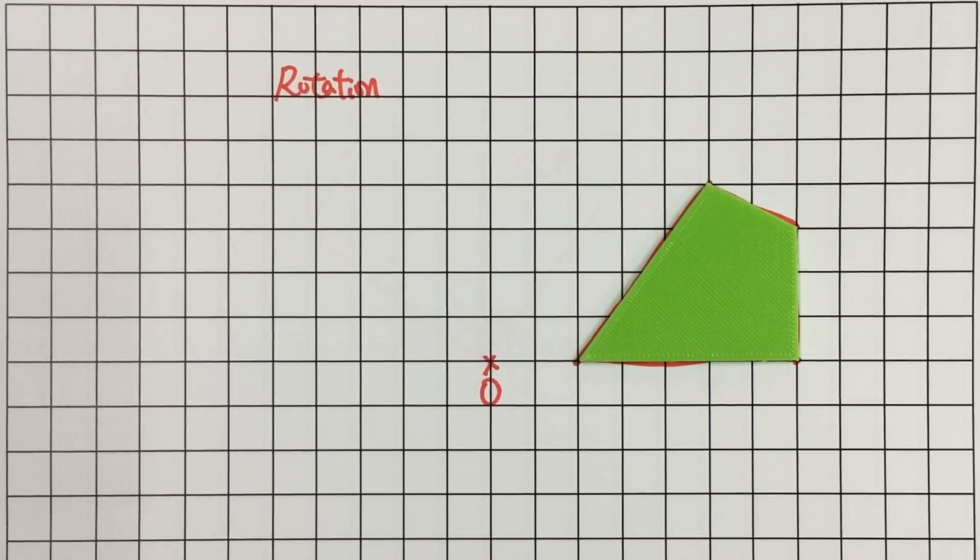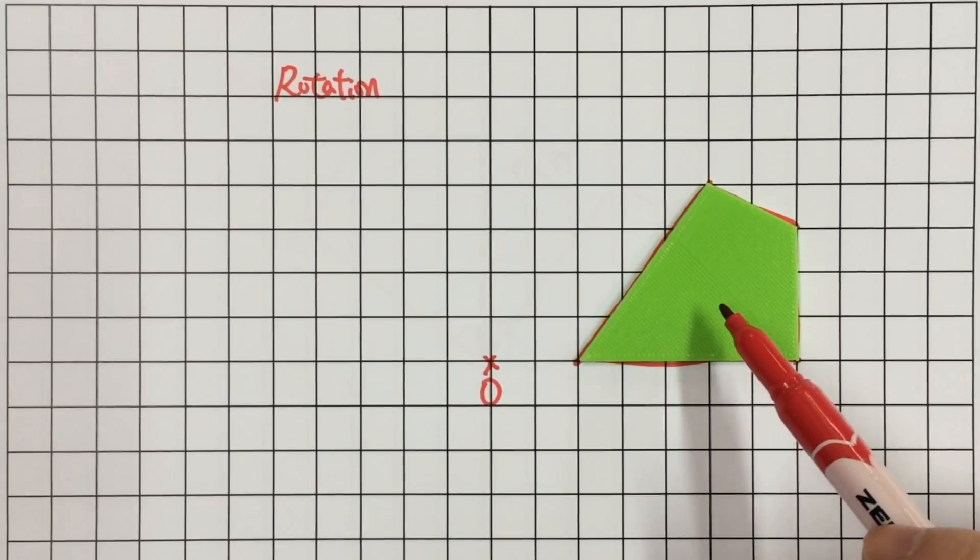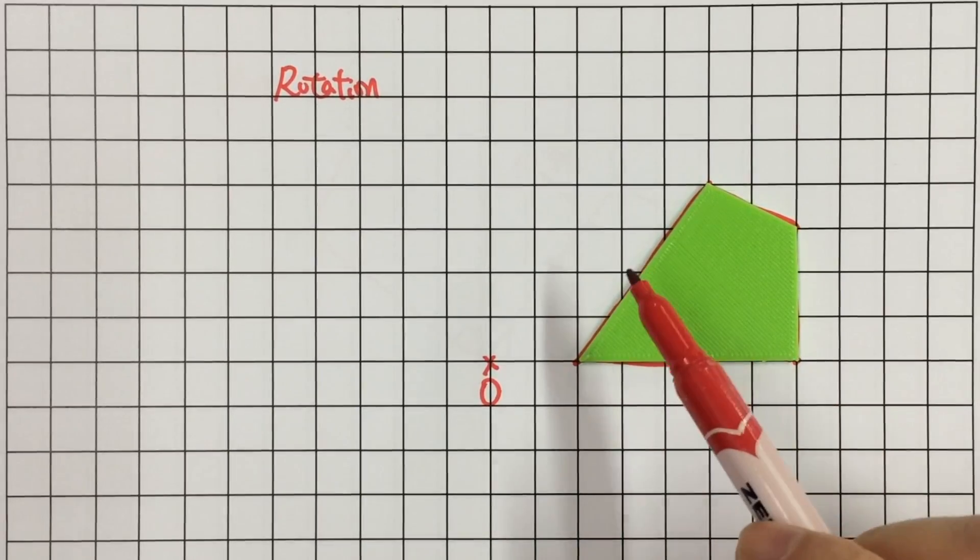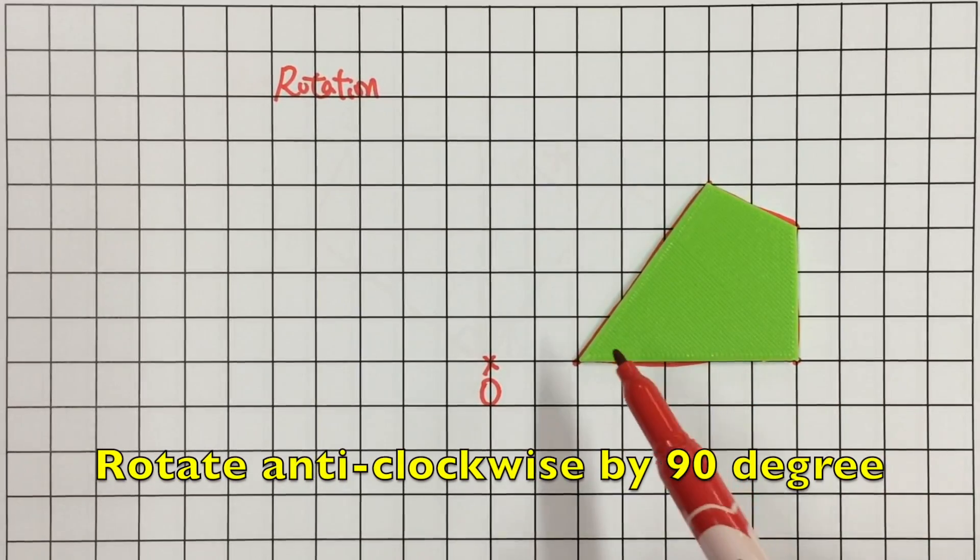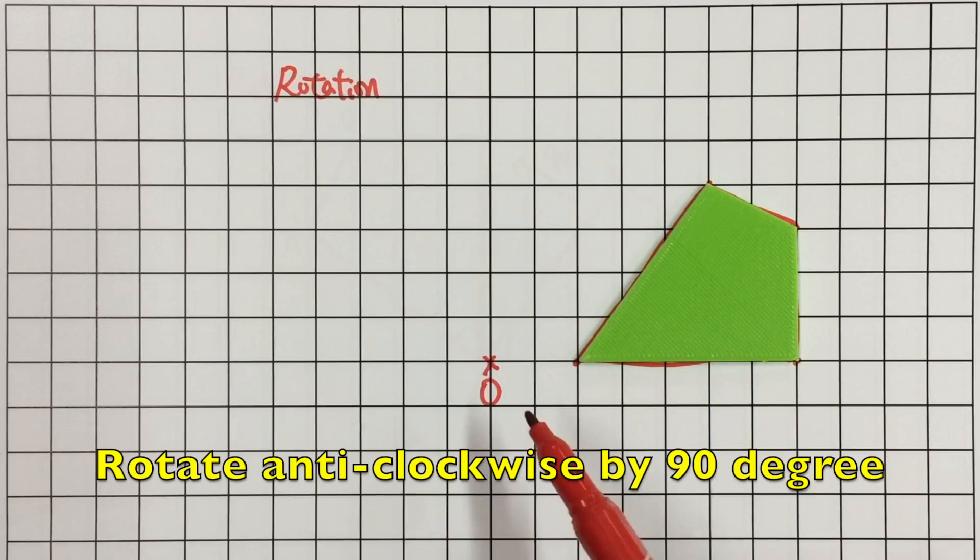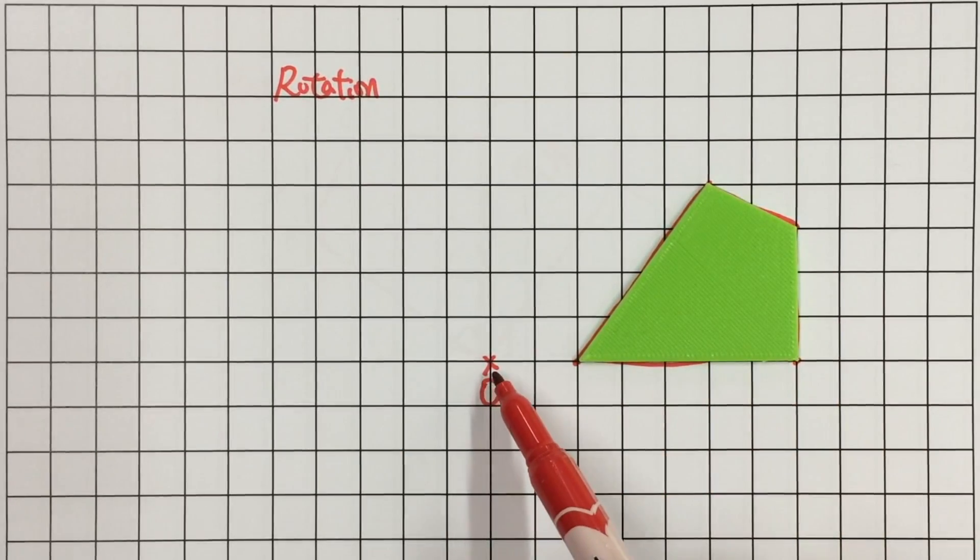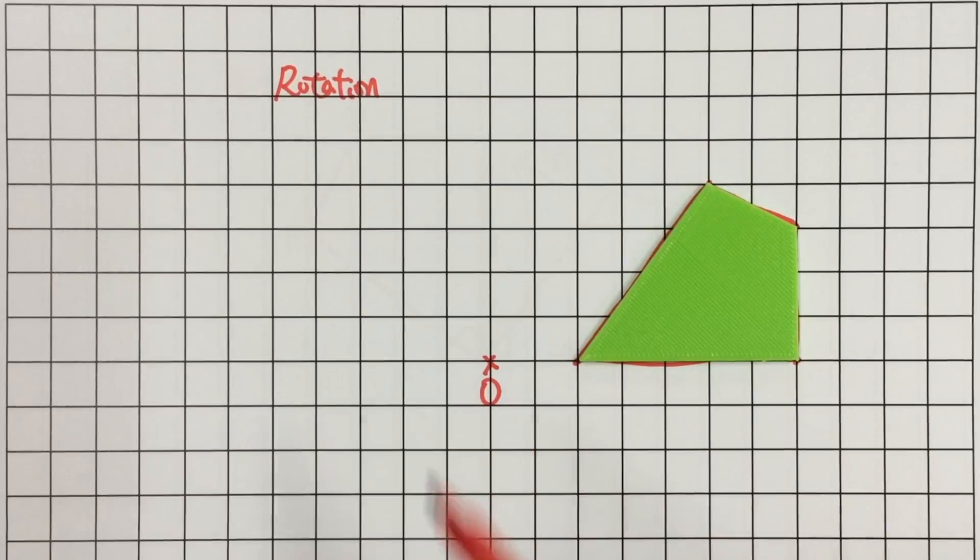Okay, let's look at how to draw the rotation of this figure in anticlockwise direction and rotate by 90 degrees. Look, none of the vertices touched the center of rotation O.